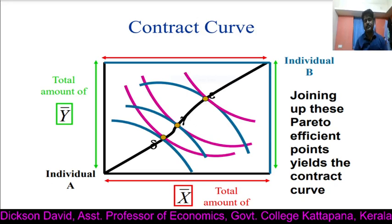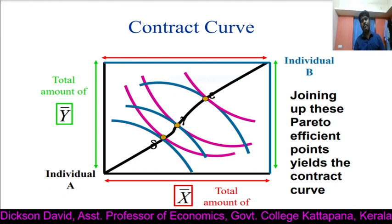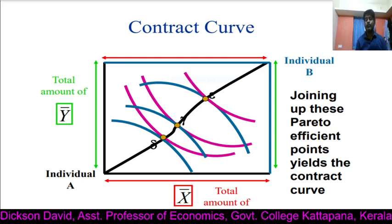Hi students, today we want to learn what is contract curve. We already studied what is an Edgeworth box diagram. On the screen you can see an Edgeworth box diagram, which consists of two sets of indifference curves. One set shows different levels of satisfaction of individual A, and another set of indifference curves shows different levels of satisfaction of individual B.